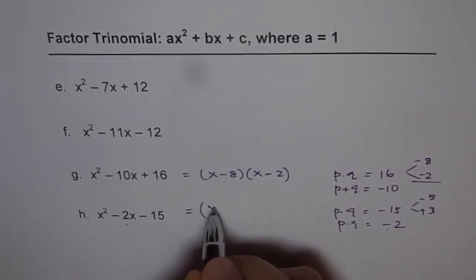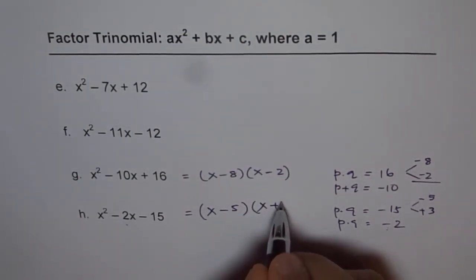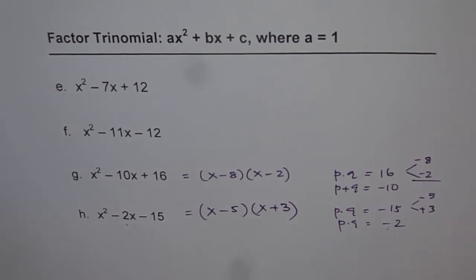So we get our answer as x minus 5 times x plus 3. So that is how we factor trinomials where a is 1. Try E and F yourself. Thank you and all the best.